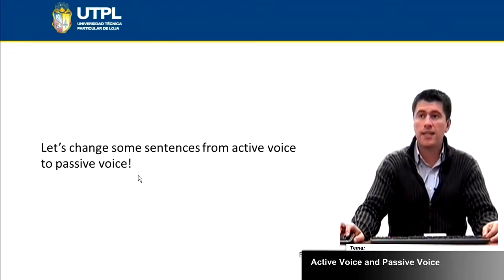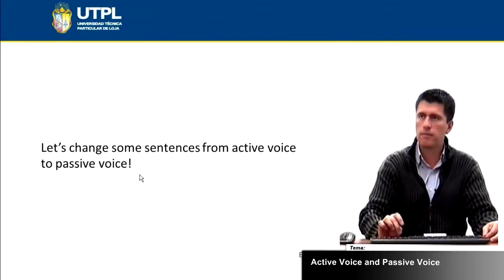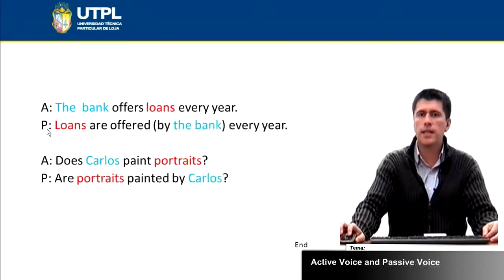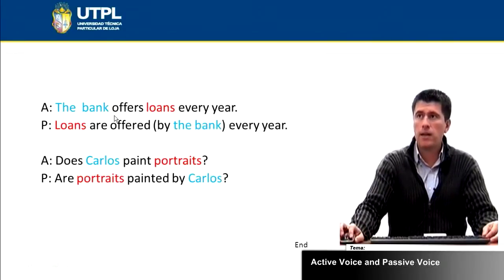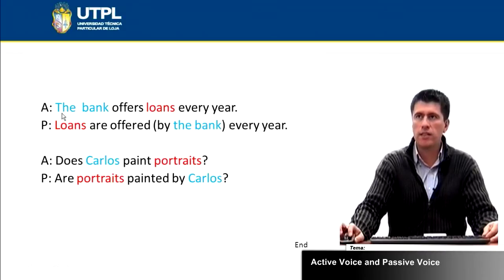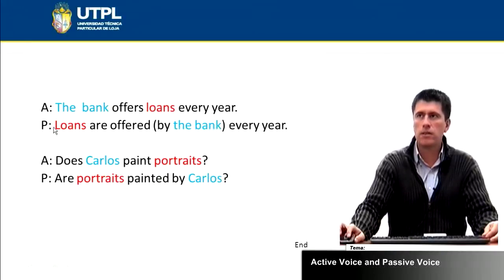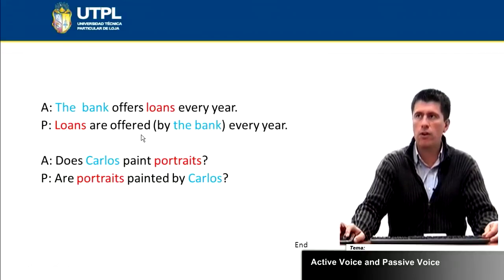Now let's change some sentences from the active voice to the passive voice. Active voice: 'The bank offers loans every year.' Loans means préstamos. We have the subject, the verb, and the object. In the passive voice, what was the object becomes the subject: 'Loans are offered by the bank every year.'